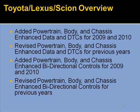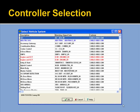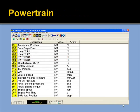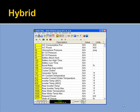For Toyota, we again updated the tool for 2009-2010 powertrain, body, and chassis data, as well as all the bi-directional controls for 2009-2010, and went back through previous years updating any missing data and additional information received from Toyota on older vehicles. Here's vehicle selection for a 2010 Toyota Camry. Controller selection shows quite a few controllers supported on the Toyota tool. An example of powertrain data on what looks like a new Lexus, an ABS data example, and hybrid data supported in the tool.